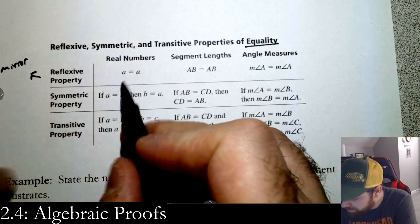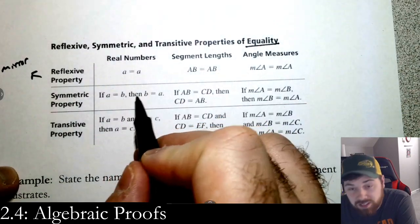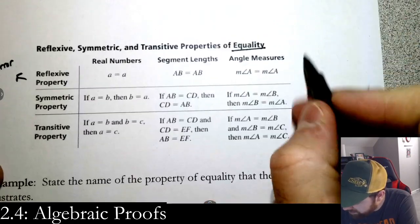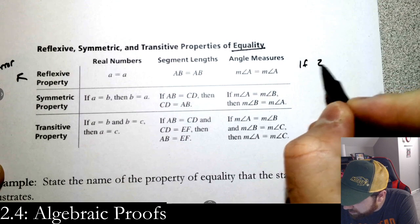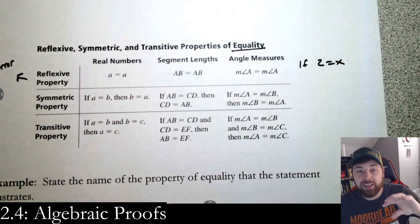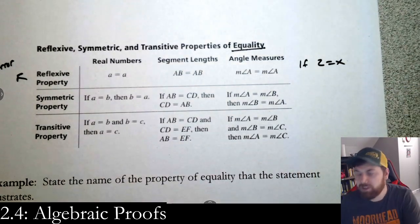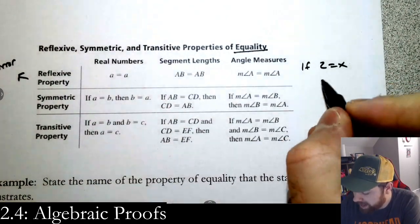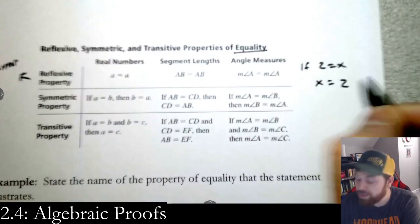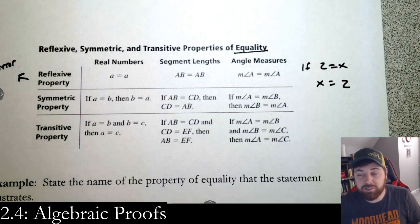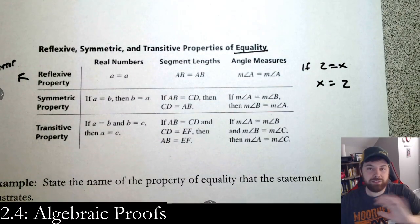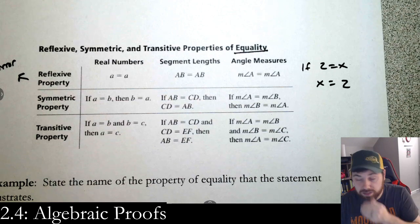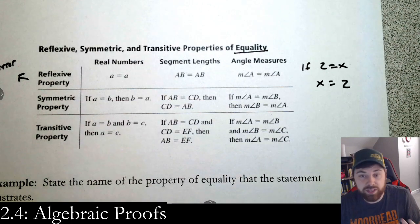A common use is: if we get 2 = x at the end, we can flip it to x = 2. That's the symmetric property allowing us to do that — we just flip the order, and that's fine because the equal sign is symmetric.